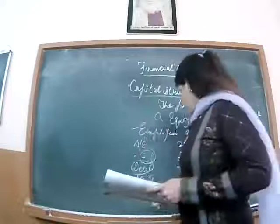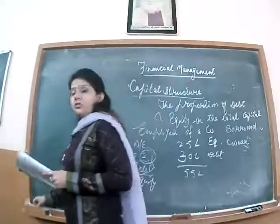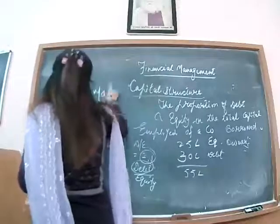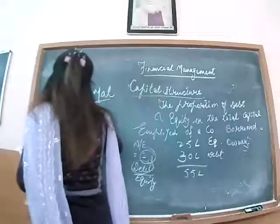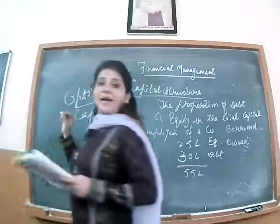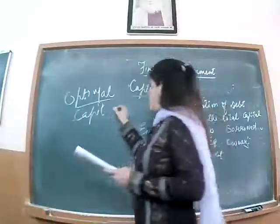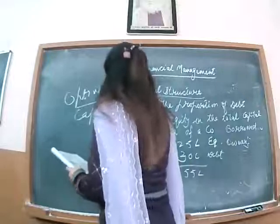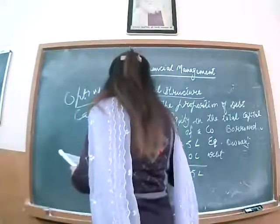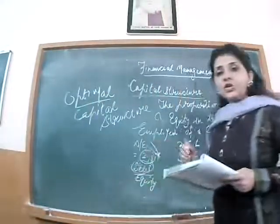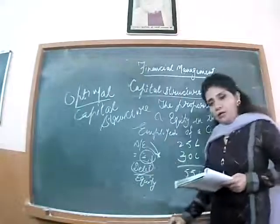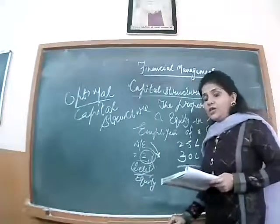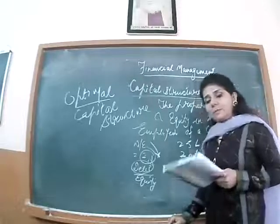Now I will talk about the optimal capital structure. There should be a proper blend — a proper mixture — of debt and equity. When I say a proper blend of debt and equity, my answer is it should be 2 to 1. Debt should not be more than double of equity — we can afford only double debt in comparison to equity.